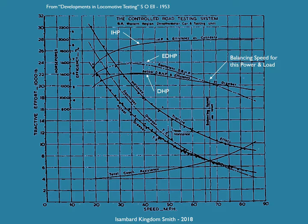This graph was created by Sam Ell at Swindon in the early 1950s, based on tests with a King class locomotive. Three of the curves are for the tractive effort of the locomotive — tractive effort is the pull — and three are for the power: indicated, equivalent drawbar, and drawbar. There is also a curve for the total coach resistance, which is the tractive effort required to move the coaches.